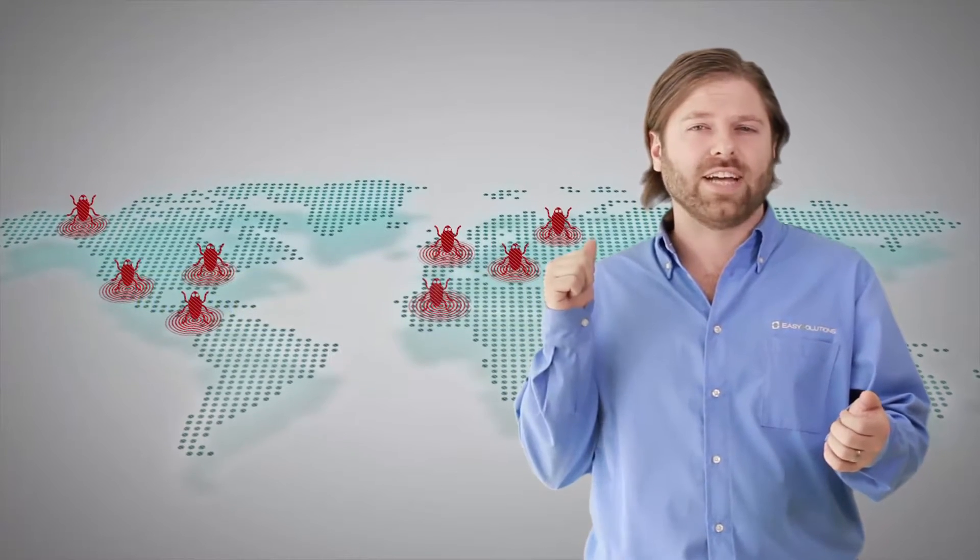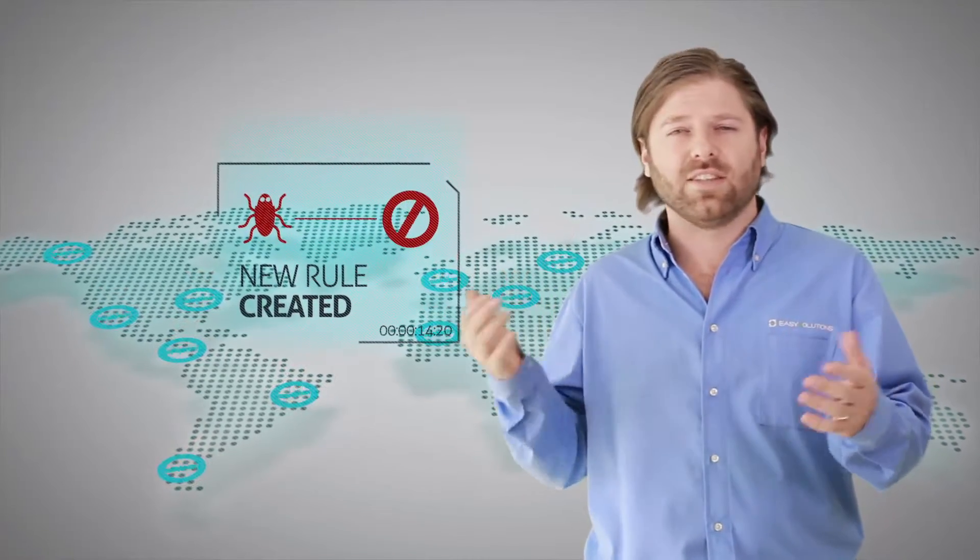Traditionally, risk monitoring systems look for anomalies by identifying common traits in past fraudulent transactions and then building rules that help avoid similar activity from taking place in the future.